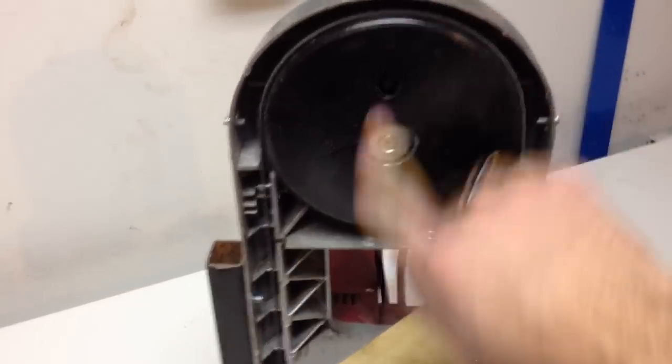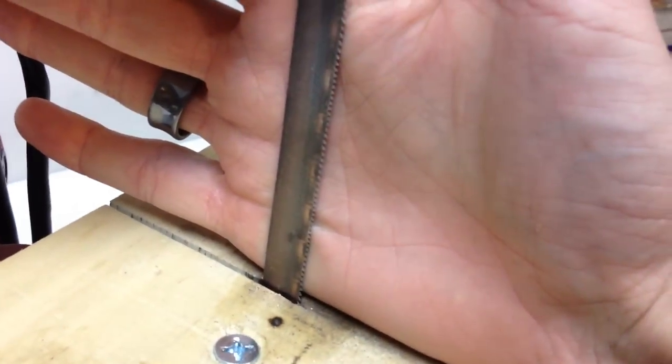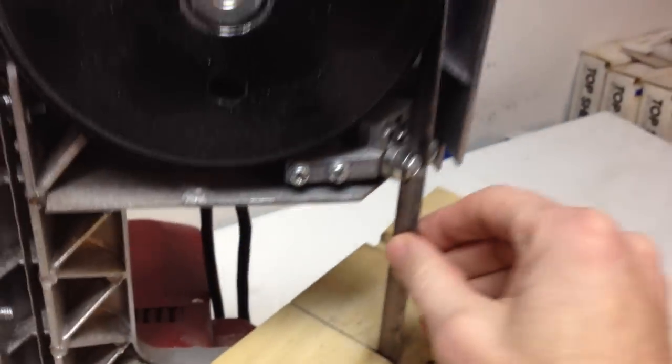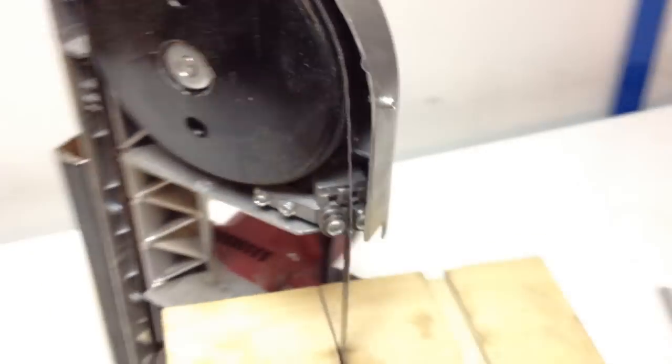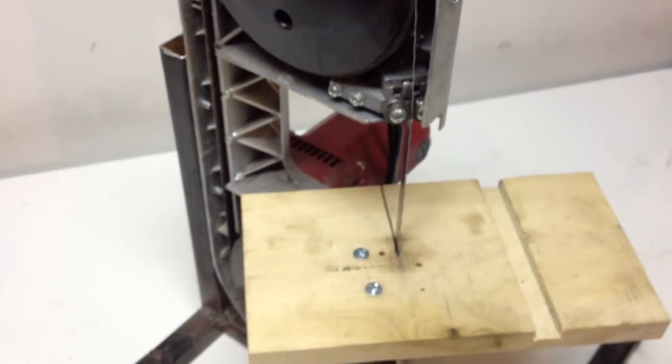And so I just went to Lowe's and got a PECA. This is the, I don't know if you can see it. It's a 14-18 variable tooth. But it cuts through almost everything.